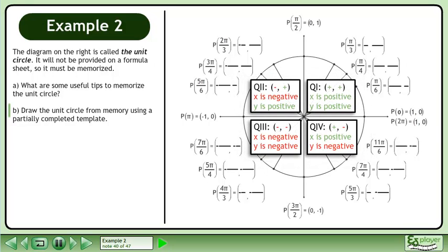In quadrant 1, both the x and y values are positive. In quadrant 2, the x value is negative and the y value is positive. In quadrant 3, both the x and y values are negative. In quadrant 4, the x value is positive and the y value is negative.